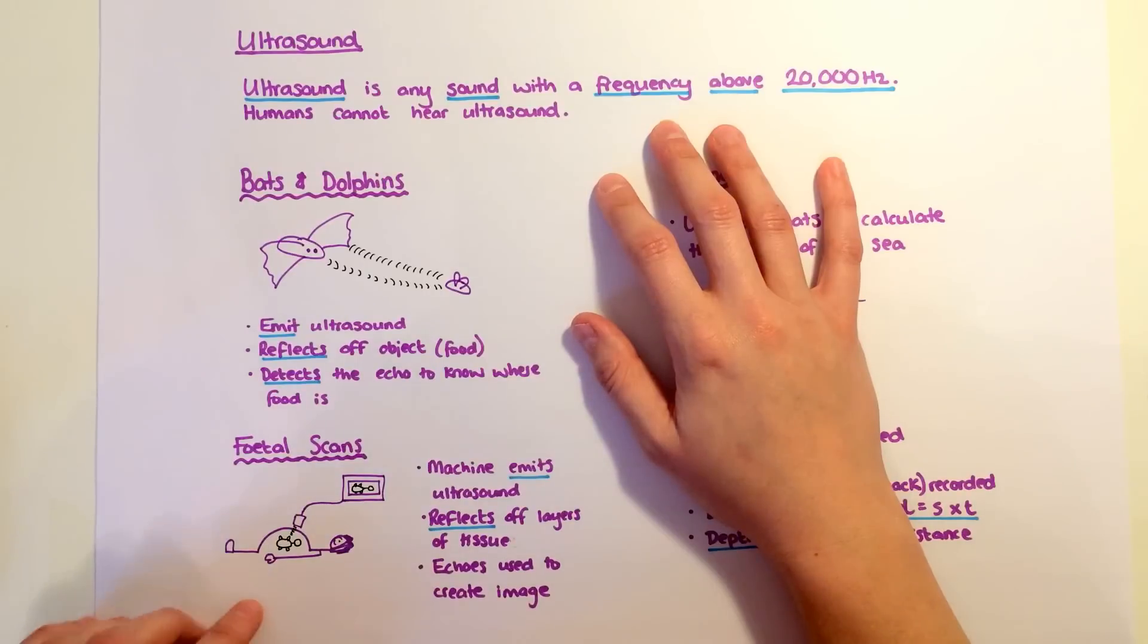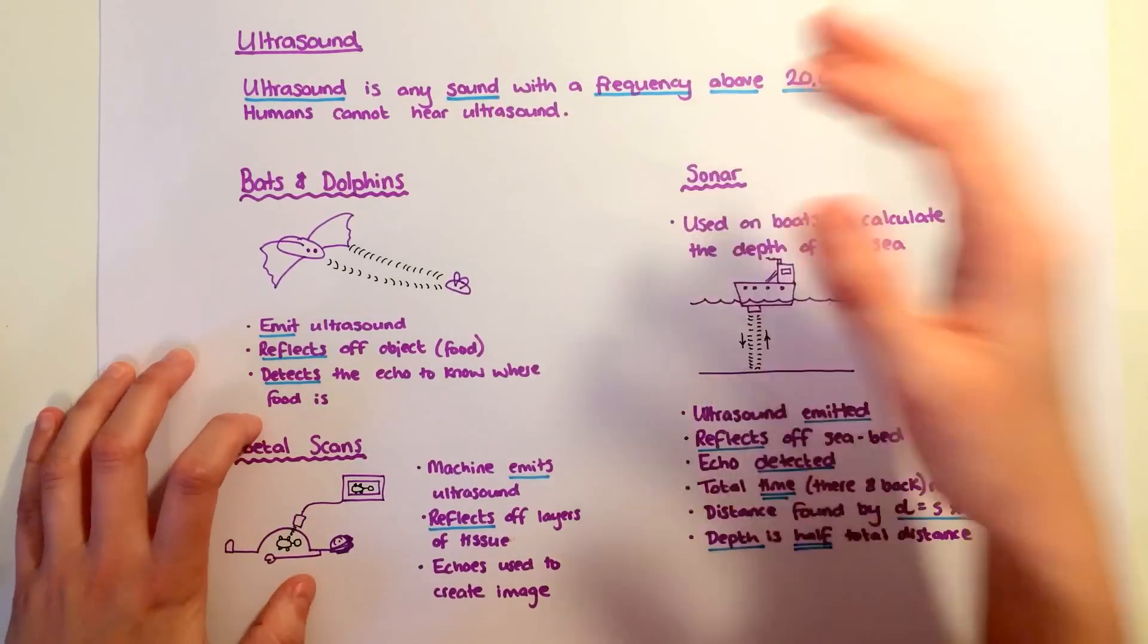Fetal or baby scans use ultrasound. An ultrasound travels into the pregnant lady's tummy, reflects off different tissues from the baby's surface, and we can use those reflections to build up a picture.